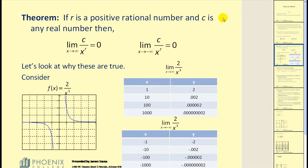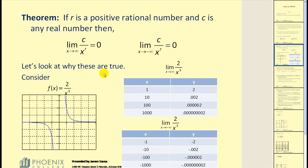Let's take a look at an important theorem used in determining the values of limits at infinity. If r is a positive rational number and c is any real number, then the limit as x approaches infinity of c divided by x to the power of r equals zero, and the limit as x approaches negative infinity of c divided by x to the power of r also equals zero. Essentially, we have a fixed numerator and an increasing or decreasing denominator, so the result approaches zero.